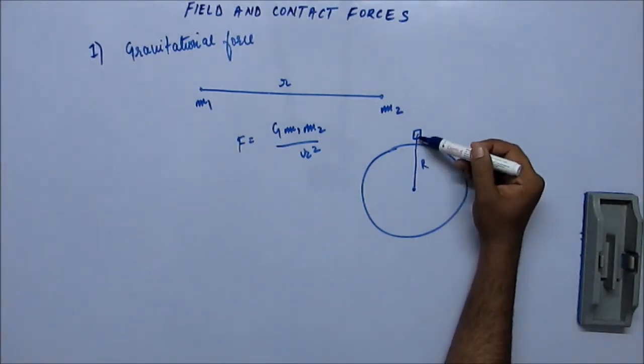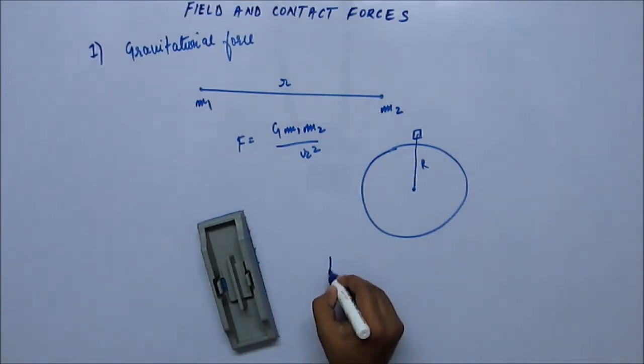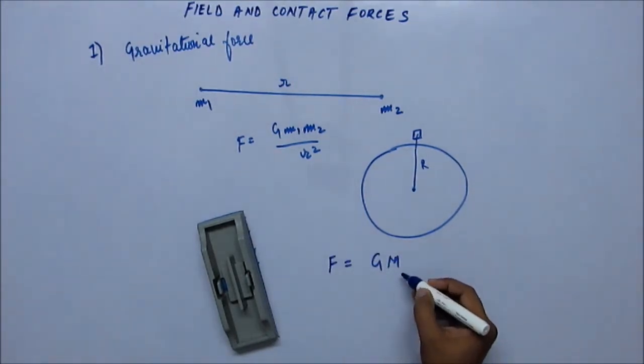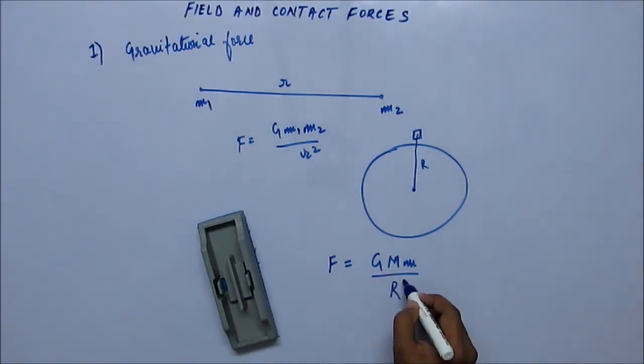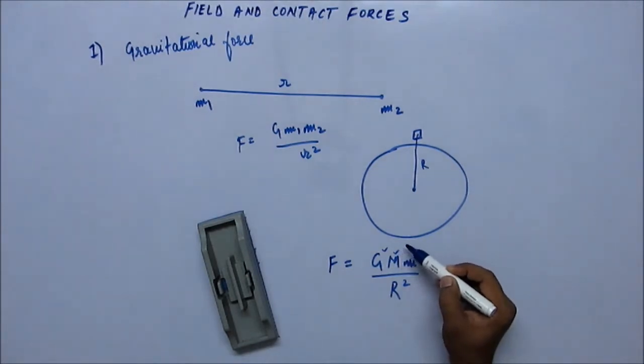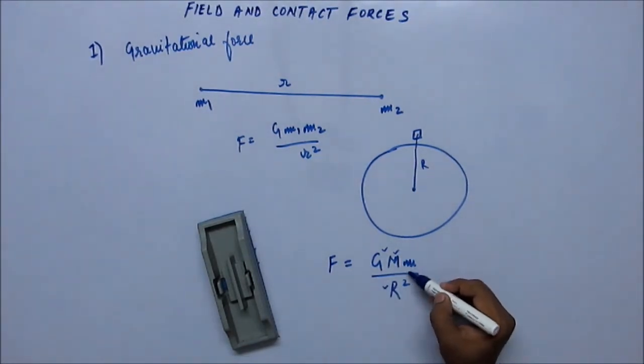So compared to 6400 kilometers plus some meters, the distance is, to a good approximation, just 6400 kilometers. In that case, the force is written as G M m upon R square, where M is the mass of Earth, small m is the mass of the body, and capital R is the radius of the Earth. This gravitational constant, mass of the Earth, and radius of the Earth are all constants, so the only variable is small m.